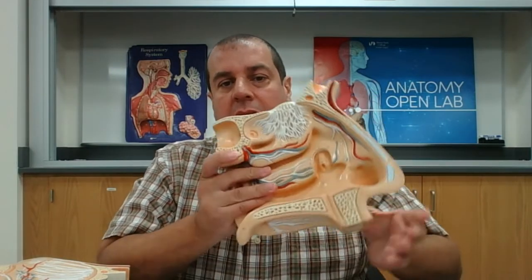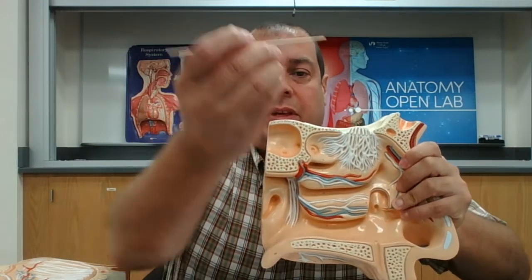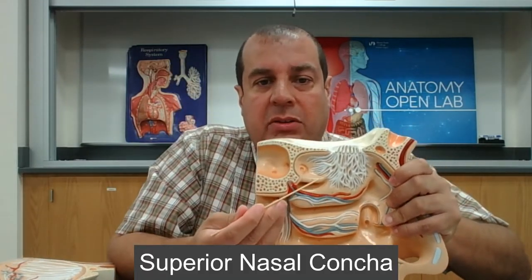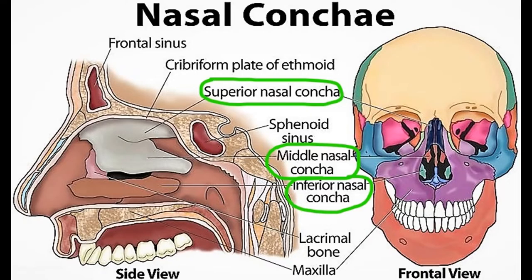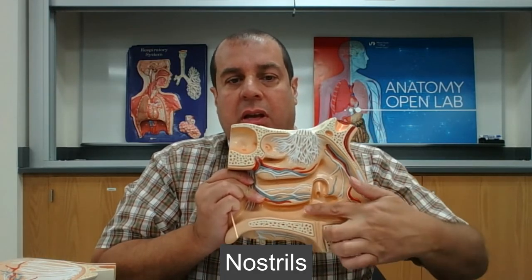Going back to this model, we have the superior nasal concha, the middle nasal concha, and the inferior nasal concha. These conchae are shelf-like projections on either side, three of them. They are made up of bone, and in between them you have canals called meatuses, through which the air travels after entering through the nostril.